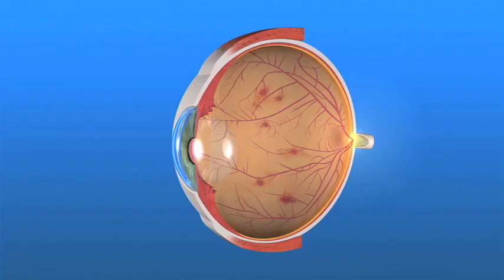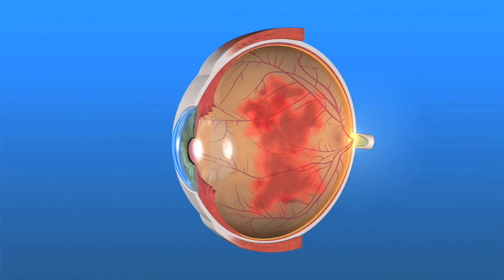It is possible to have a considerable amount of neovascularization and still have good vision for some time. That means that neovascularization may not be caught early enough and serious problems can occur. For instance, the abnormal blood vessels can bleed into the vitreous, the clear gel in the middle of the eye. This bleeding, called a vitreous hemorrhage, can prevent light rays from reaching the retina.